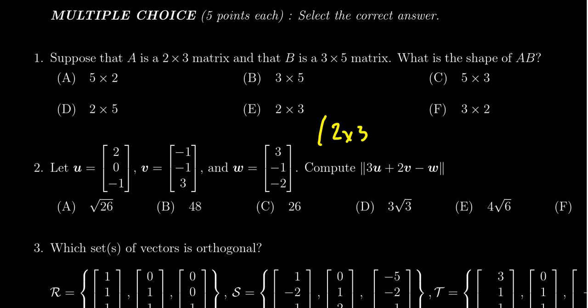Now matrix products are only defined when the number of columns of the first factor is equal to the number of rows in the second factor. We see a defined product because we have three and three.